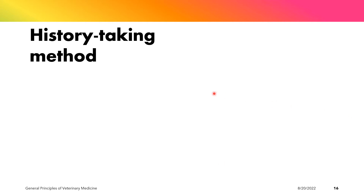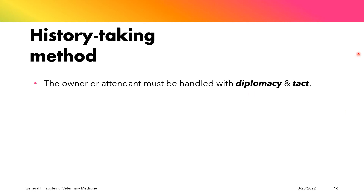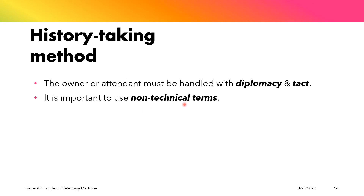Here are some important points to consider when doing history-taking. First, the owner or attendant must be handled with diplomacy and tact — that is, the art of dealing with people in a sensitive and effective way. It is also important to use non-technical terms because stock owners are likely to be confused by technical expressions and can be reluctant to express themselves when confronted with terms they do not understand. The clinician should use questions in layman's terms that can be easily understood by the attendant or owner.